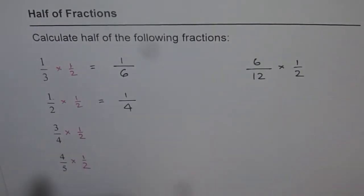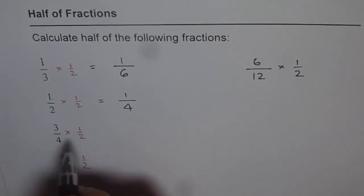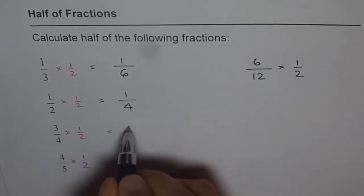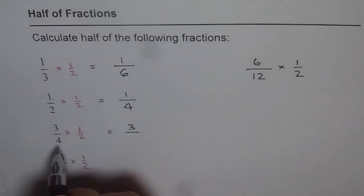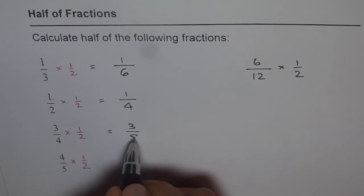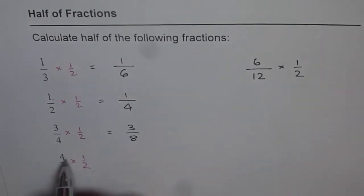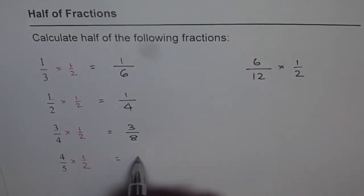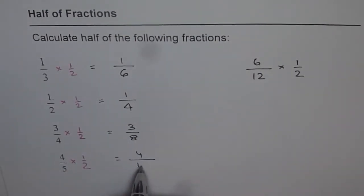3 over 4 times half: 1 times 3 is 3 and 4 times 2 is 8. Then 4 times 1 is 4 and 5 times 2 is 10. So we get our answers. That is how you get half of a given fraction.